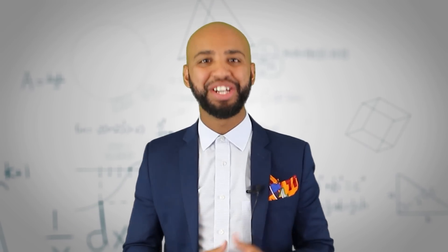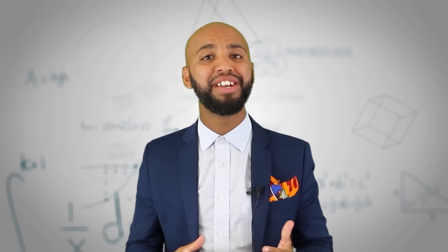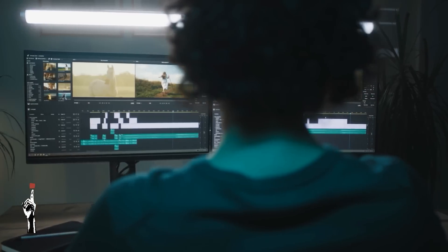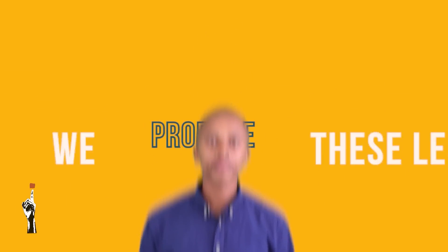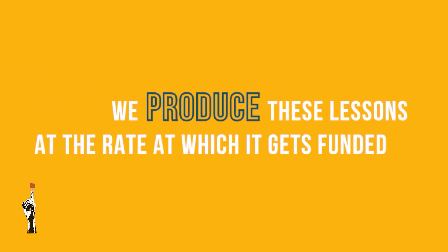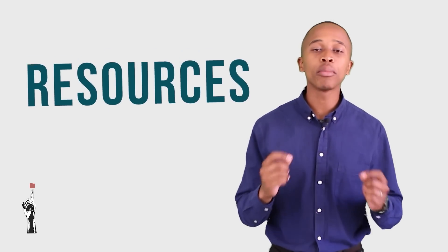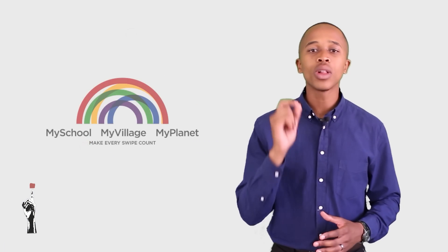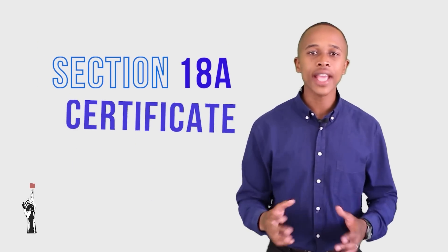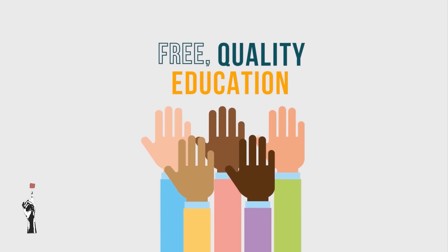This marks the end of another lesson on financial literacy. See you next time when we will discuss and learn about the cash receipt journal. These lessons are costly to produce, but we are determined to keep them free for everyone. Here are three ways to join hands with us: share our resources so more people can benefit; add us on My School as a beneficiary; and we offer Section 18A certificates, so your contribution will have a tax benefit. Let's collaborate for free quality education for all South Africans.